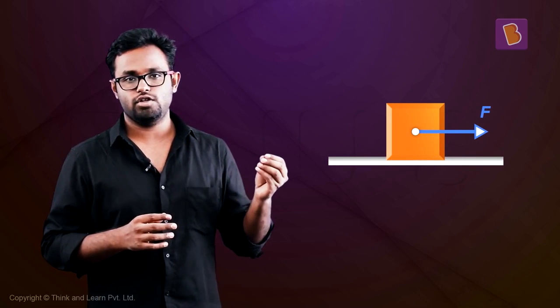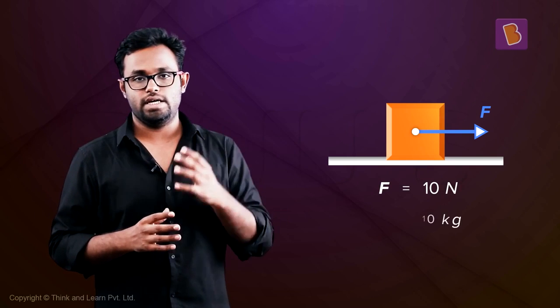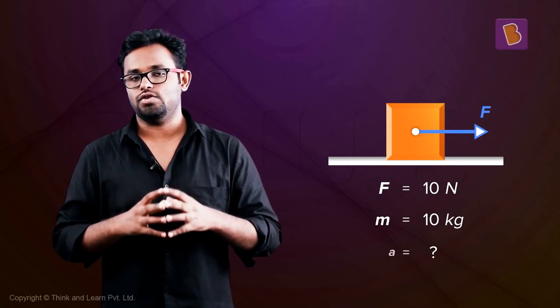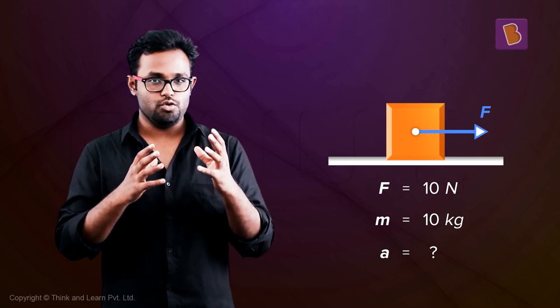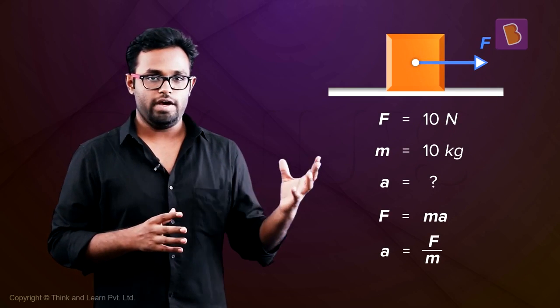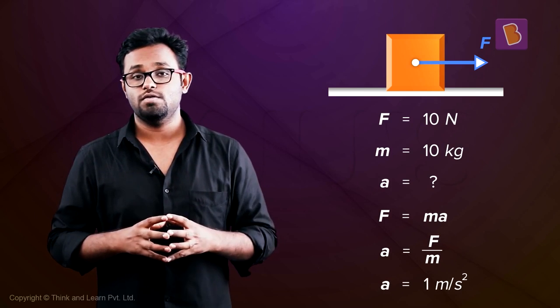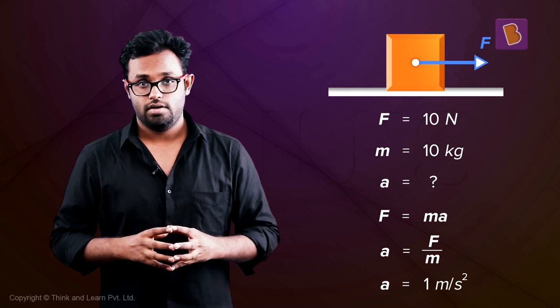Let's say we have a block on a horizontal plane. The force acting on the block is given as 10 Newtons and the mass of the block is 10 kg. Now what will be its acceleration? If you use F equals MA, you know the value of F, you know the value of M, so A will be equal to 1 meter per second squared. Now that is fine.